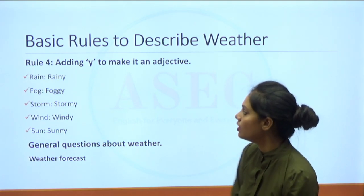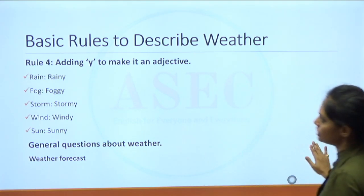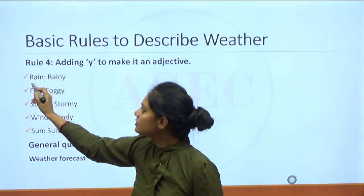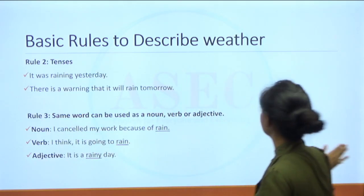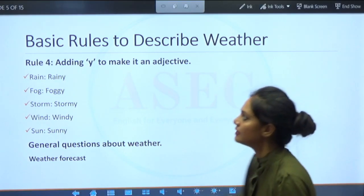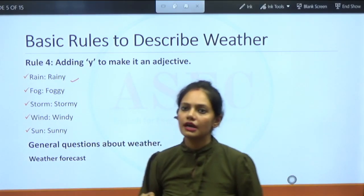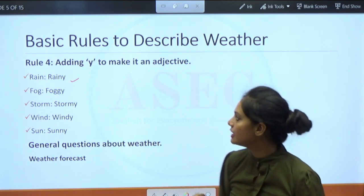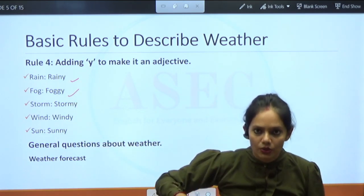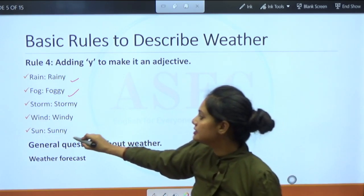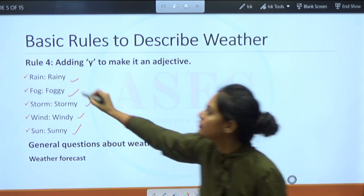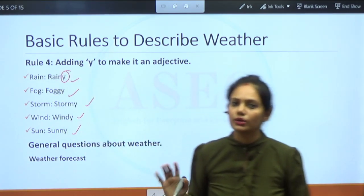Rule number four: adding -y to make it an adjective. Rain is a noun, but the moment we say 'rainy,' it converts to an adjective. Similarly: fog becomes foggy, storm becomes stormy, cloud becomes cloudy, sun becomes sunny. If you add -y at the end, you are converting the noun to an adjective.